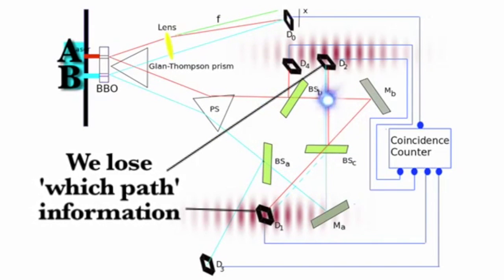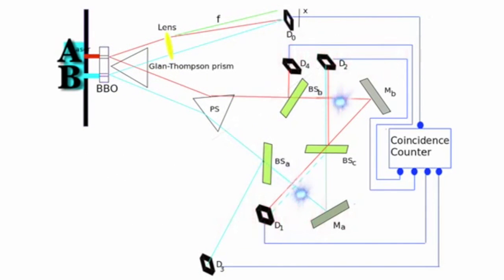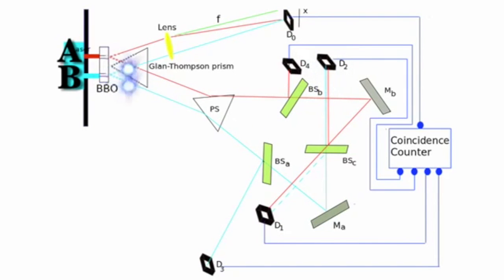Now here is one of the important implications of this experiment, about what is causing collapse. Some argue physical interaction from the detector is what is causing the collapse. But if that was the case, D one and D two should cause collapse every time. But that is not what happens.